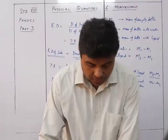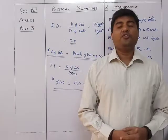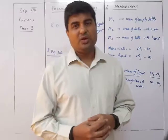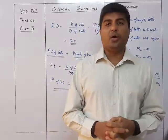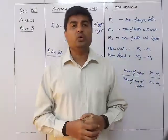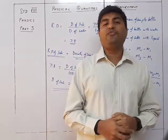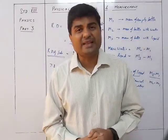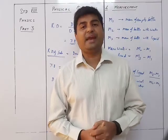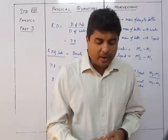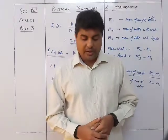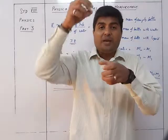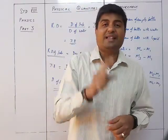Now we look at a new concept: floating and sinking. The density of a substance helps us determine whether a body will float or sink in a liquid. A solid will float on a liquid if its density is less than the density of the liquid, and a solid will sink if its density is greater than the density of the liquid. For example, the density of water is 1, and density of cork or wood is 0.7, so wood floats. Ice has density 0.92, which is less than water, so ice floats.